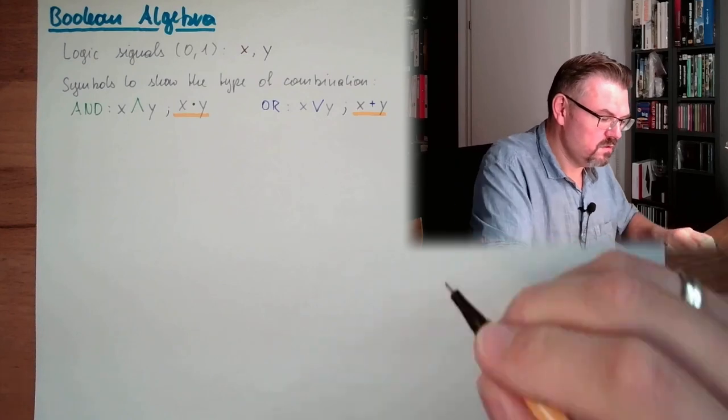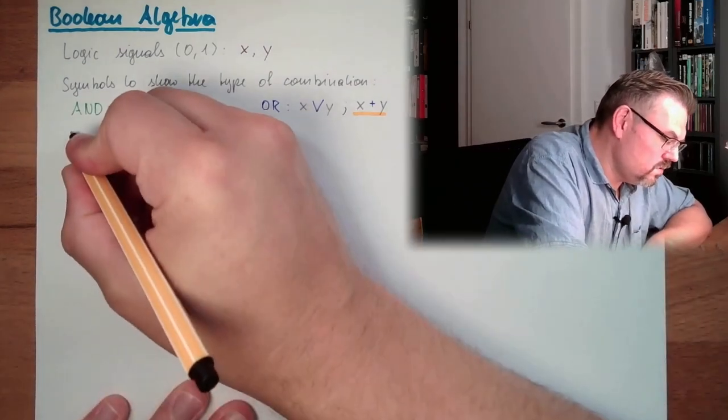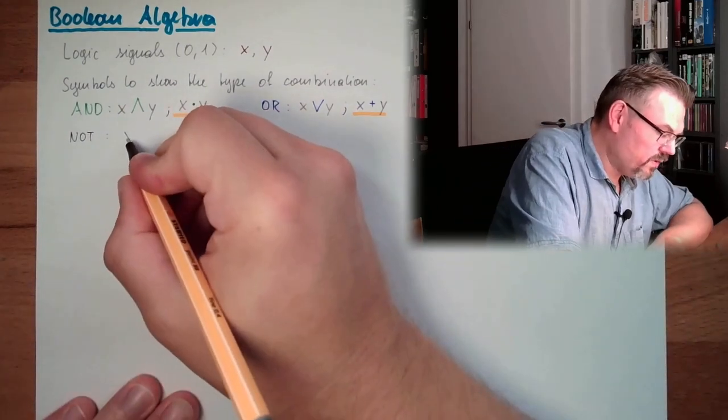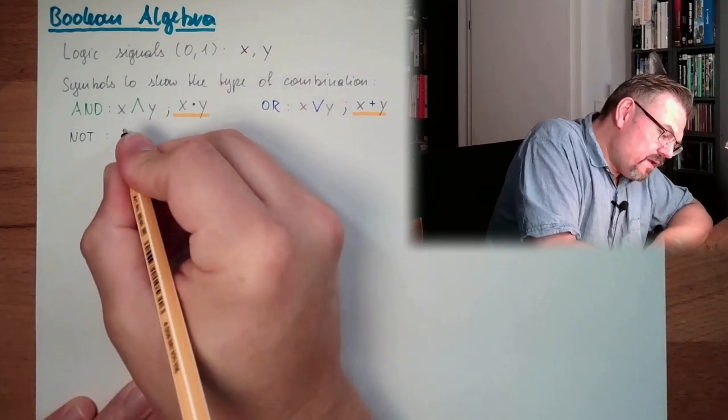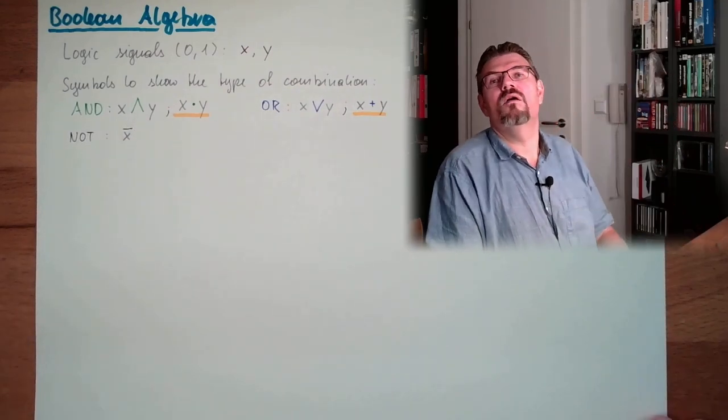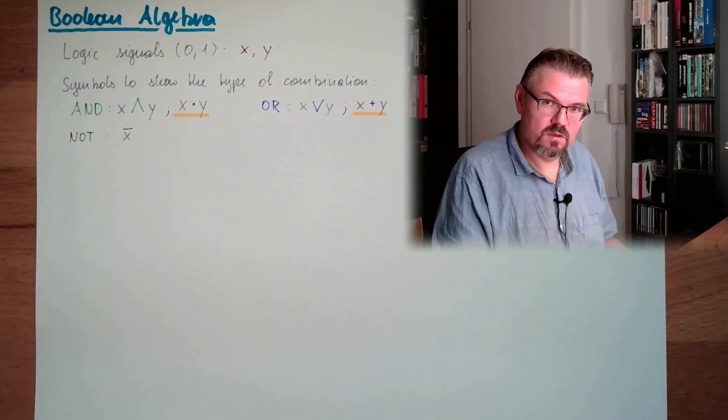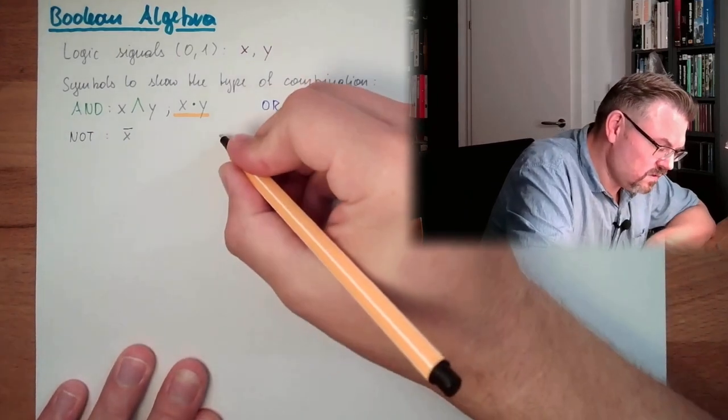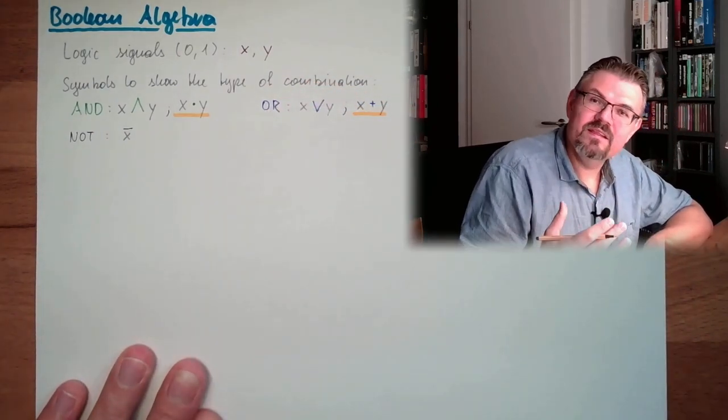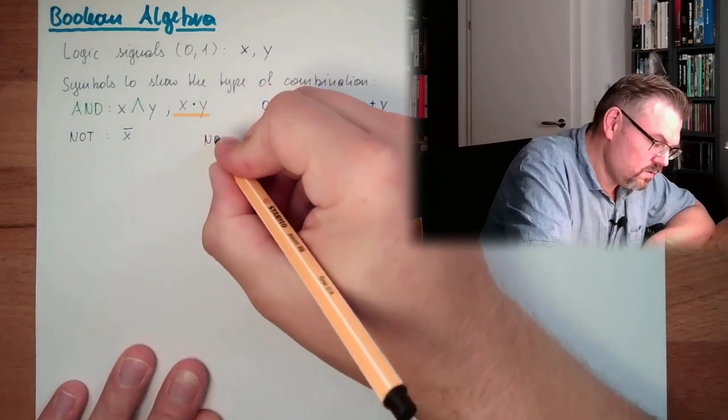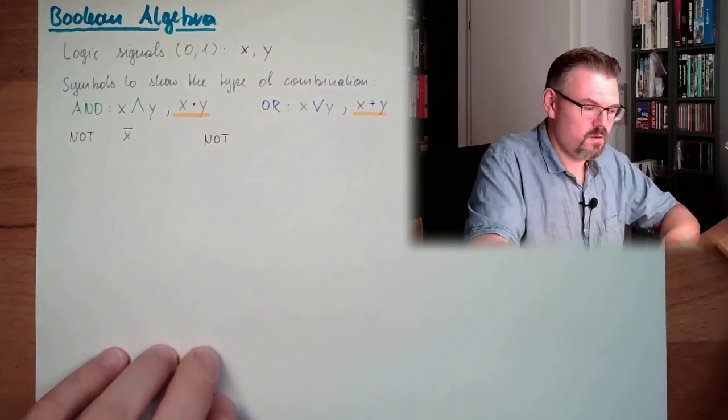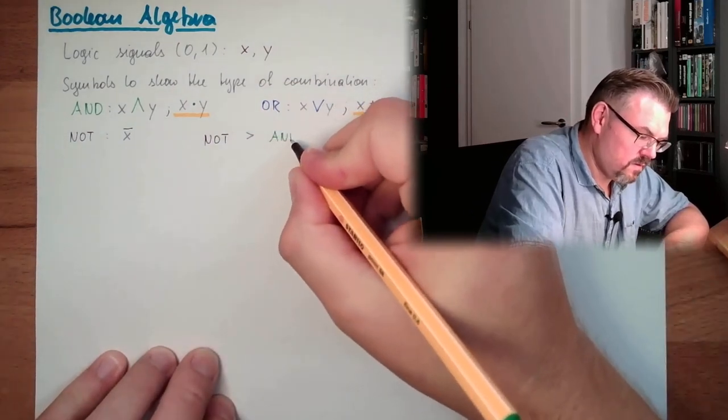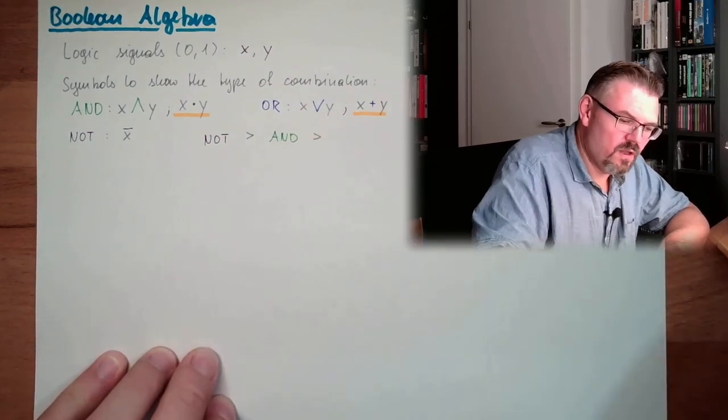And then we have a NOT. And this is simply, if I want to have NOT, exactly NOT that signal, I make here this bar, this line above the symbol. And the rule is, for calculating, for yielding, NOT is more important than AND, and this is more important than OR.